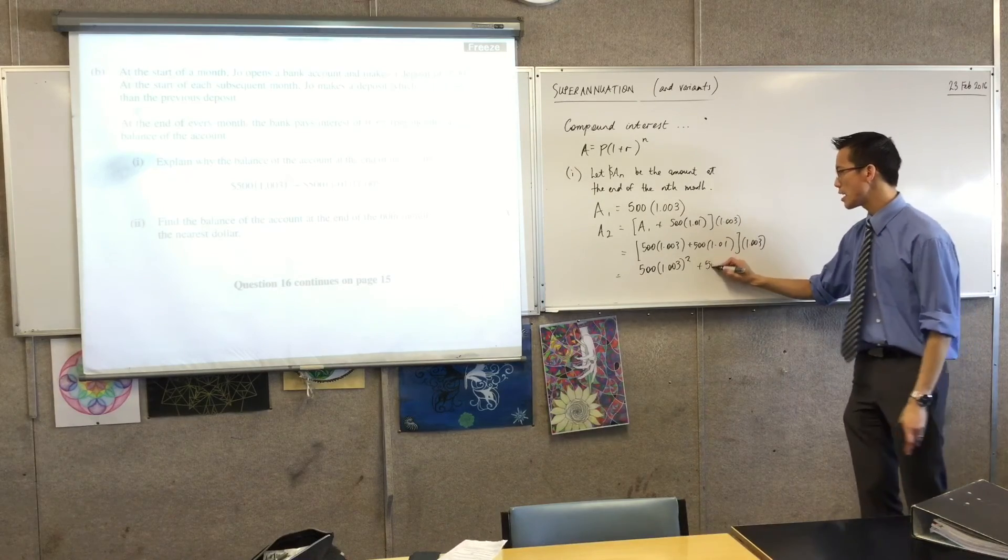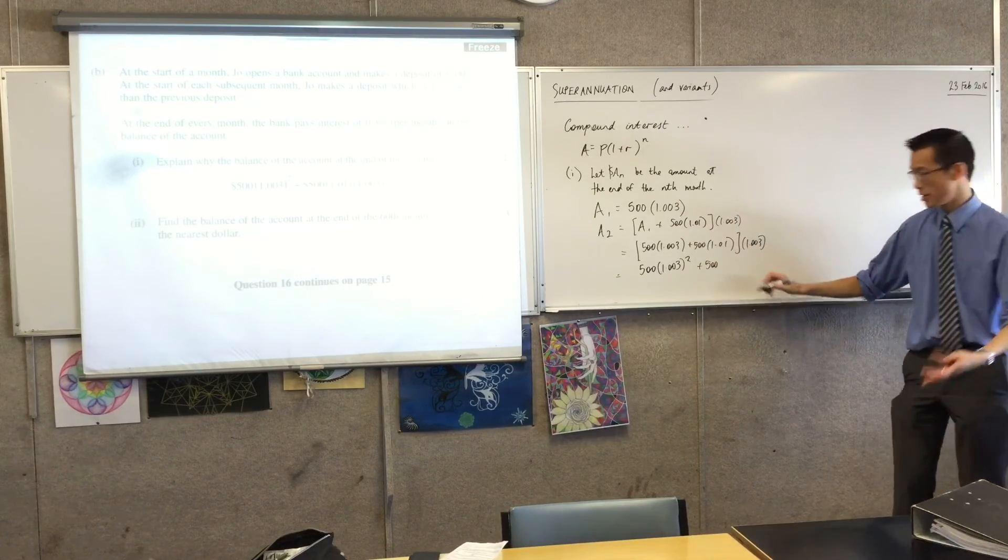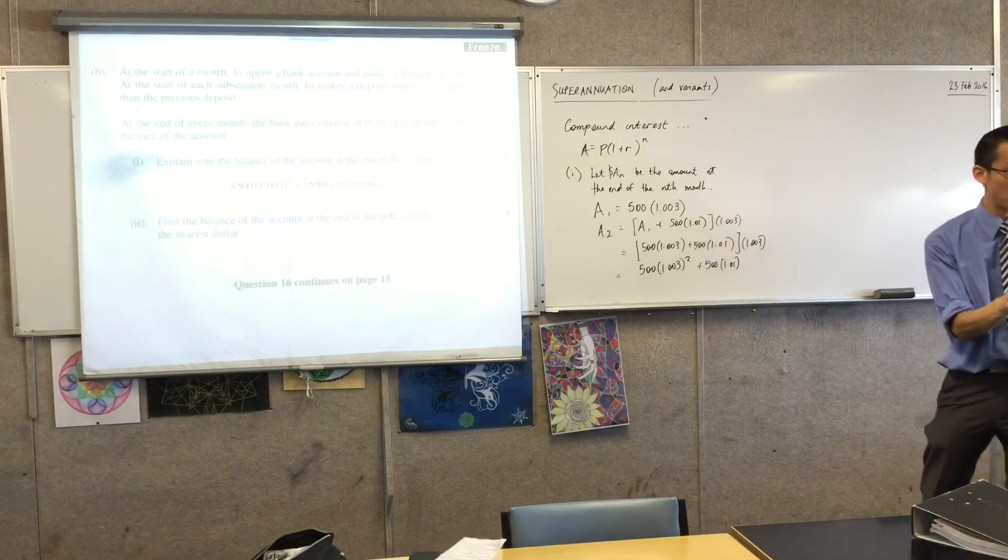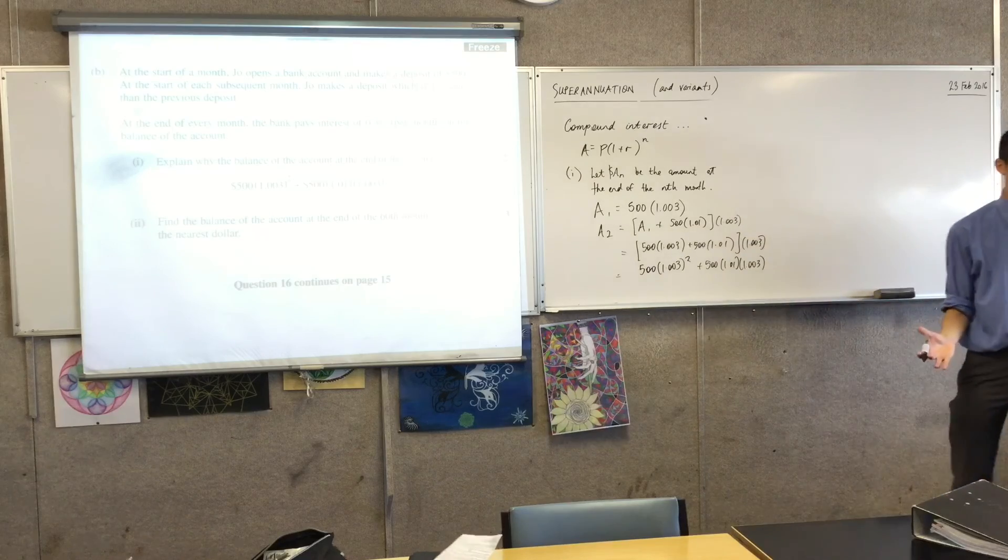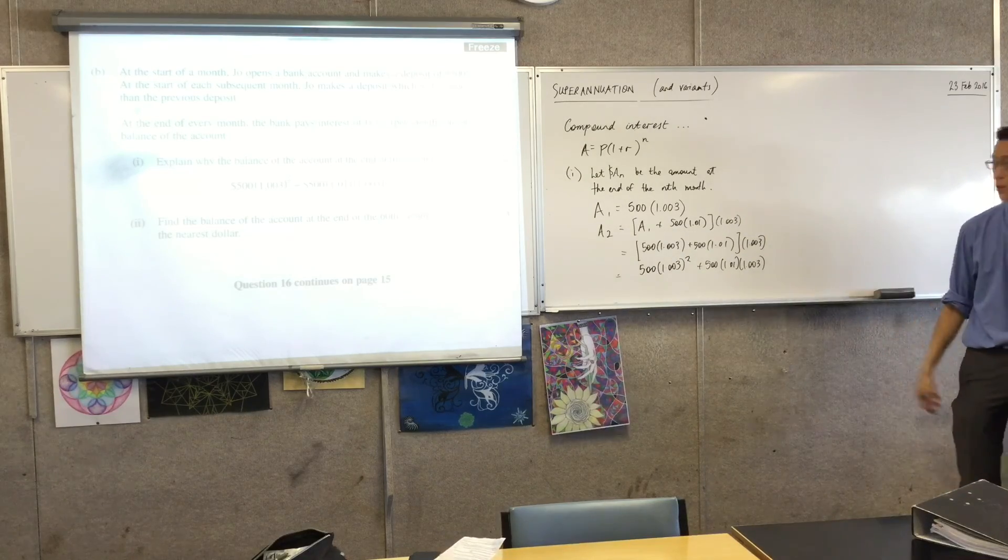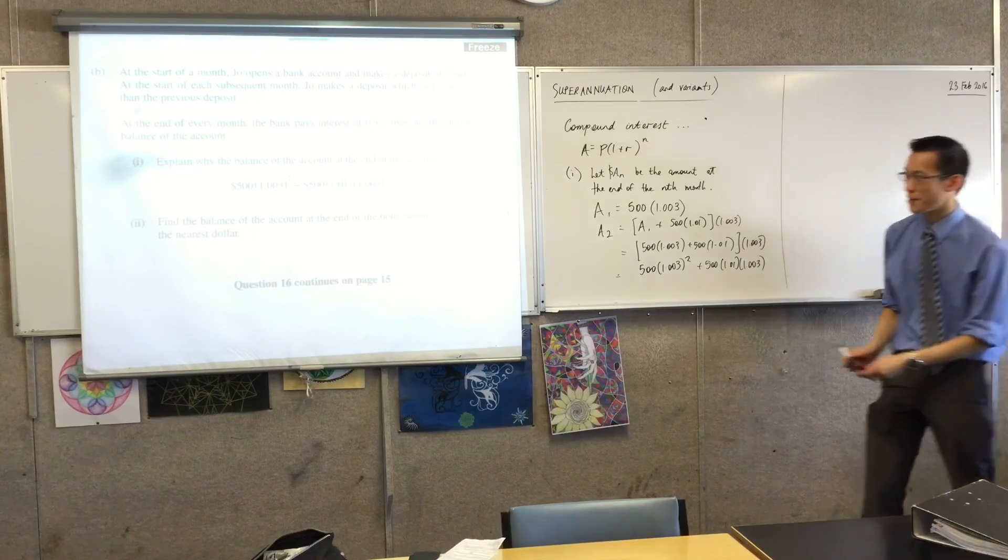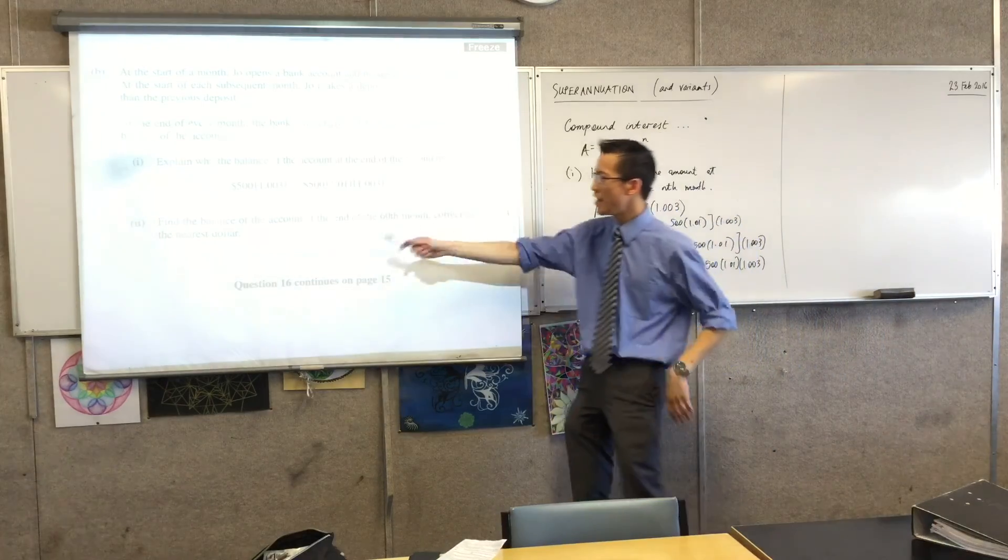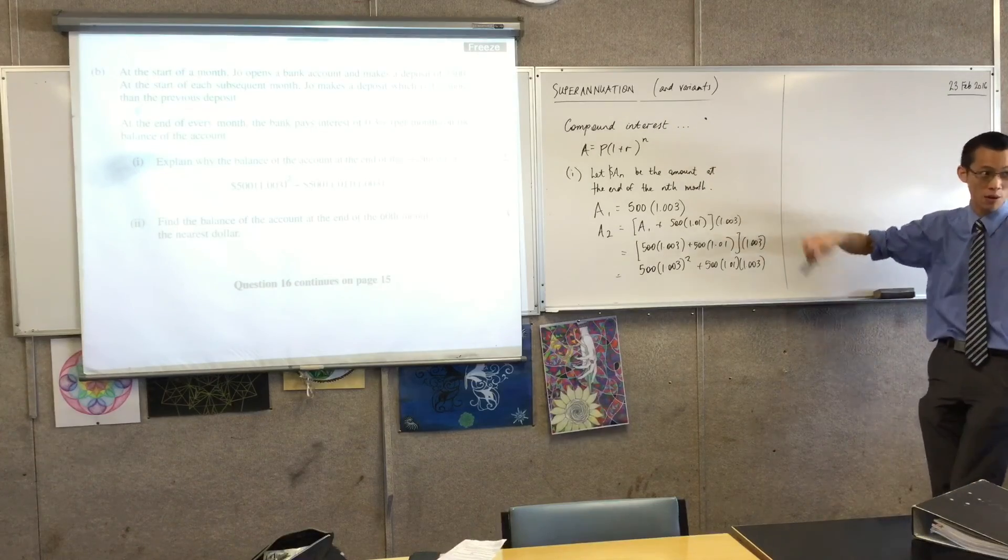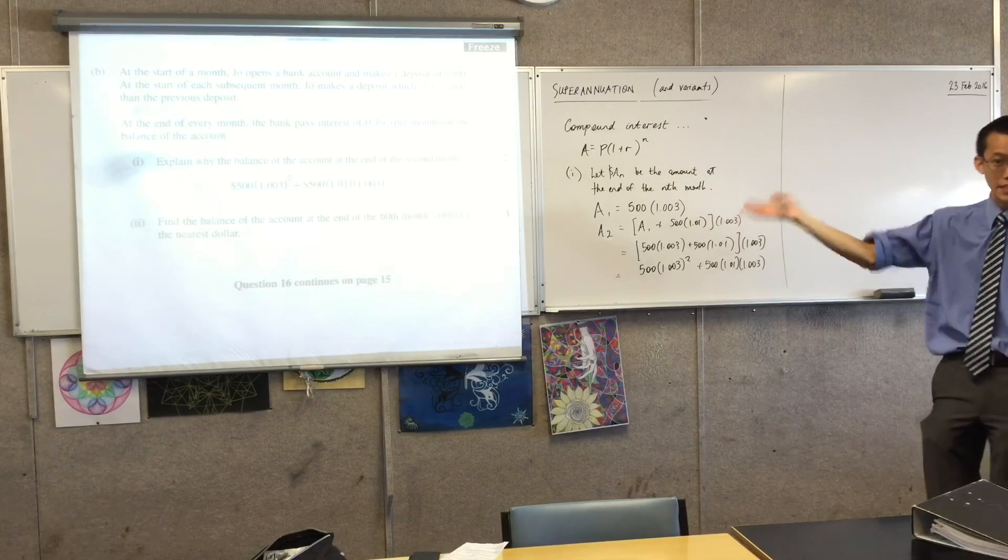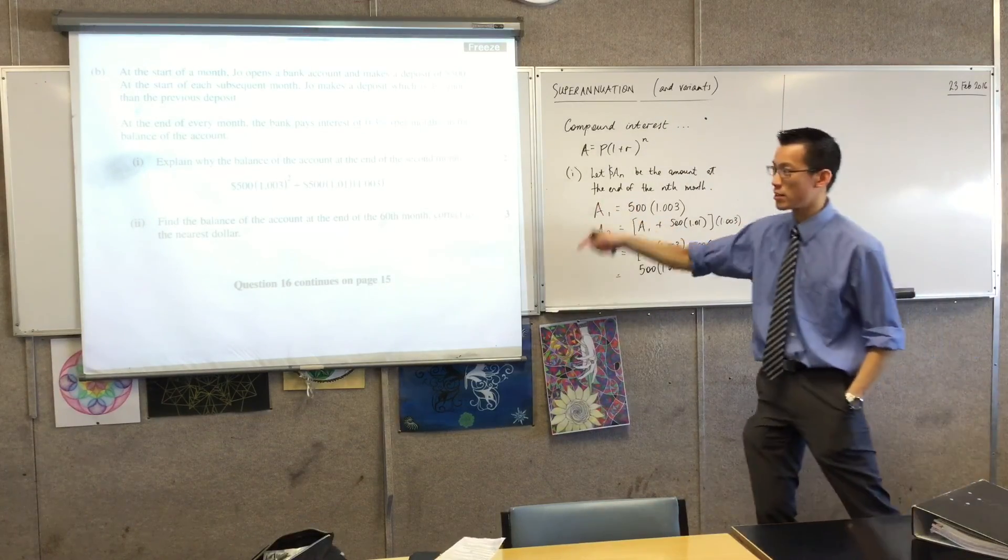And then here is the second month's deposit. It's grown, like, it started off bigger, and also it's had one lot of interest applied to it. Cool. So far, so good. Then they throw you right in the deep end. Part two. Find the balance of the account at the end of the 60th month. So clearly, I don't want to have to do A_1, A_2, A_3 all the way. I'm going to have to generalize to get to the 60th. Correct to the nearest dollar.